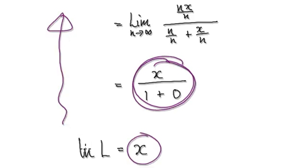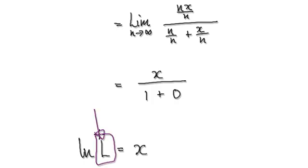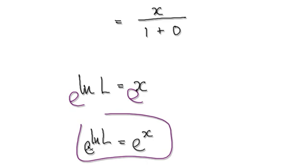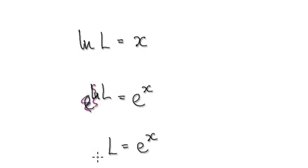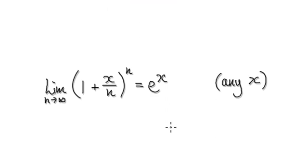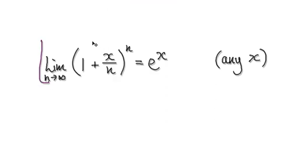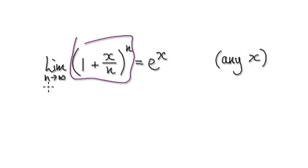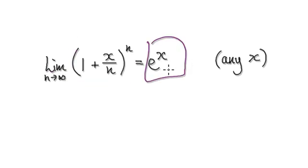Remember, right from the start, on the left-hand side we had natural log of L. So we now have ln(L) = x. To get rid of the natural log, exponentiate both sides — those two operations cancel each other out, giving L = e^x. So our limit is actually e to the power of x. The limit of this sequence as n tends towards infinity is e^x, where x could be anything.